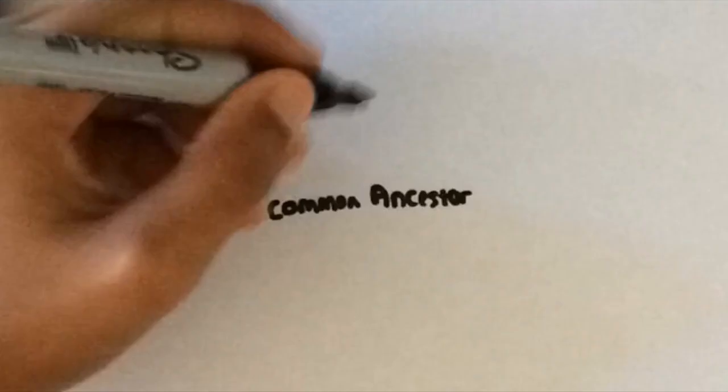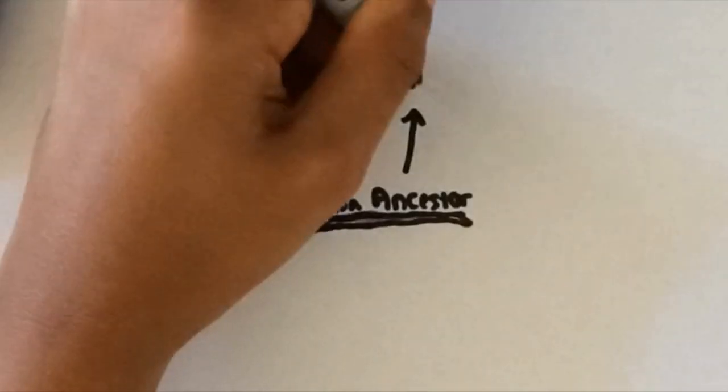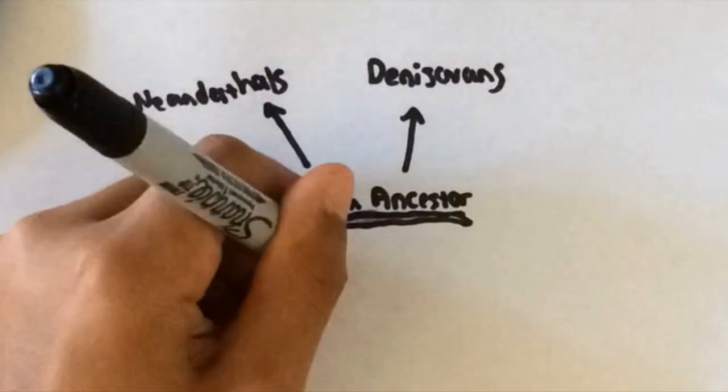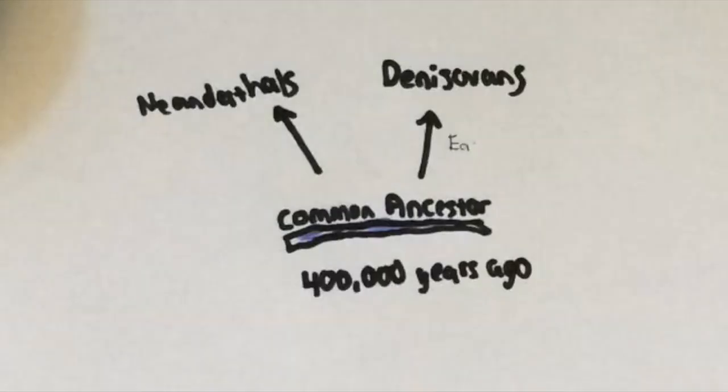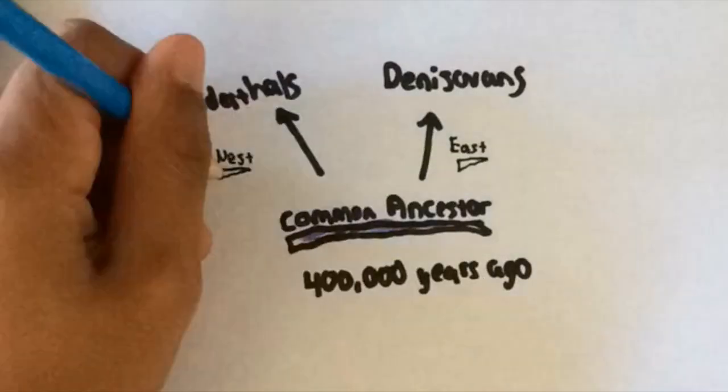After more fossil analysis, a theory was developed that the common ancestor of Denisovans and Neanderthals that lived around 400,000 years ago began to split into two genetic lineages, one leading east with Denisovans, the other leading west with Neanderthals.